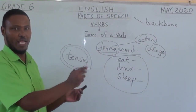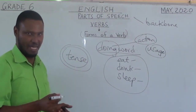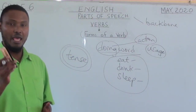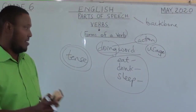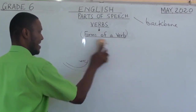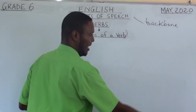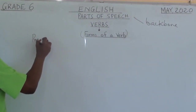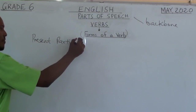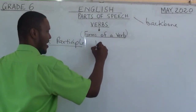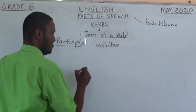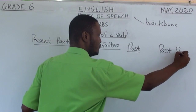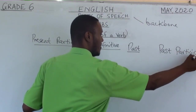So, if you want to know how to use tenses, that's when we look at the forms of a verb. How many forms of a verb are there? There are four forms of a verb. One of them is the present participle. Another is the infinitive form of the verb. Then we have the past participle form.